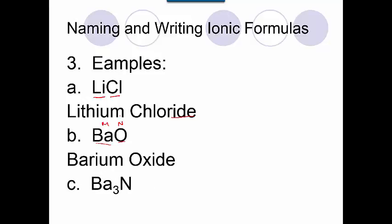Ba3N2, and we'll talk about why there's a 3 there. There's a reason, we'll talk about that later. But for naming, that doesn't matter. We're just naming it. Ba is still barium, and then N is nitrogen. But we're going to change the second ending so nitrogen would be nitride.